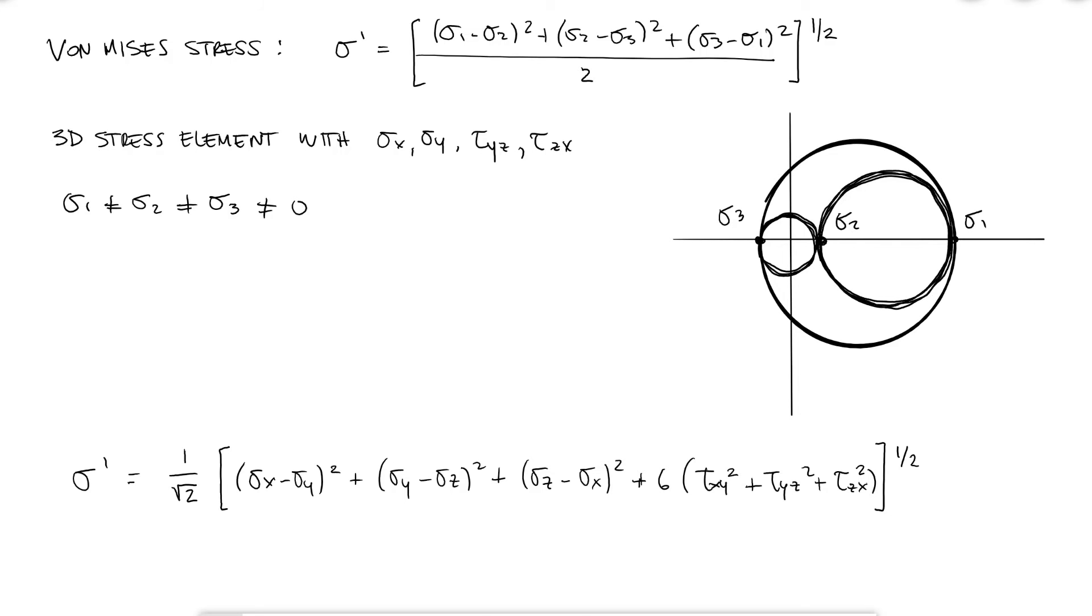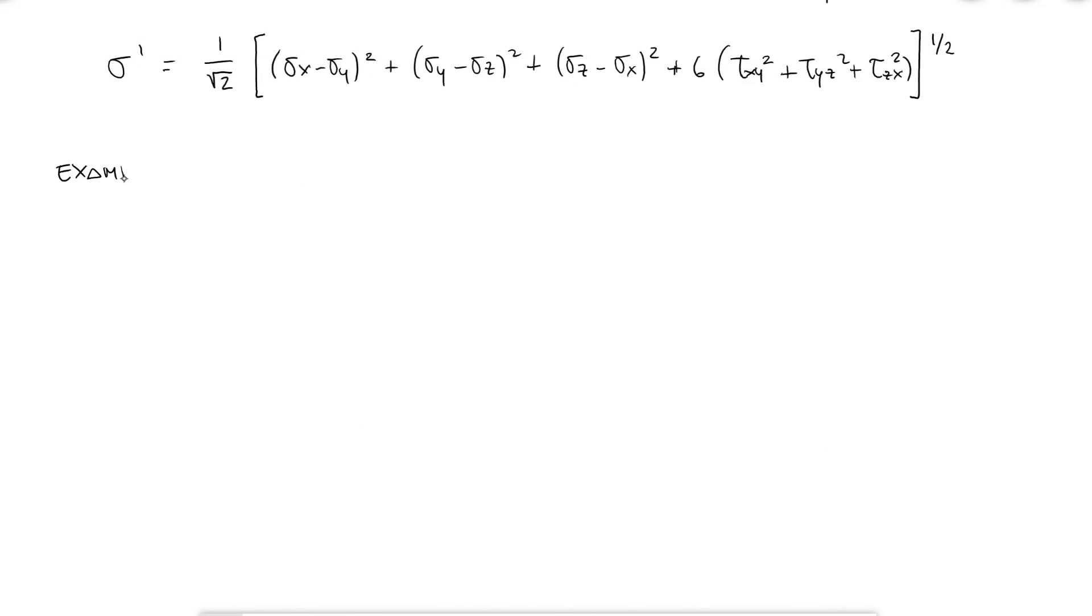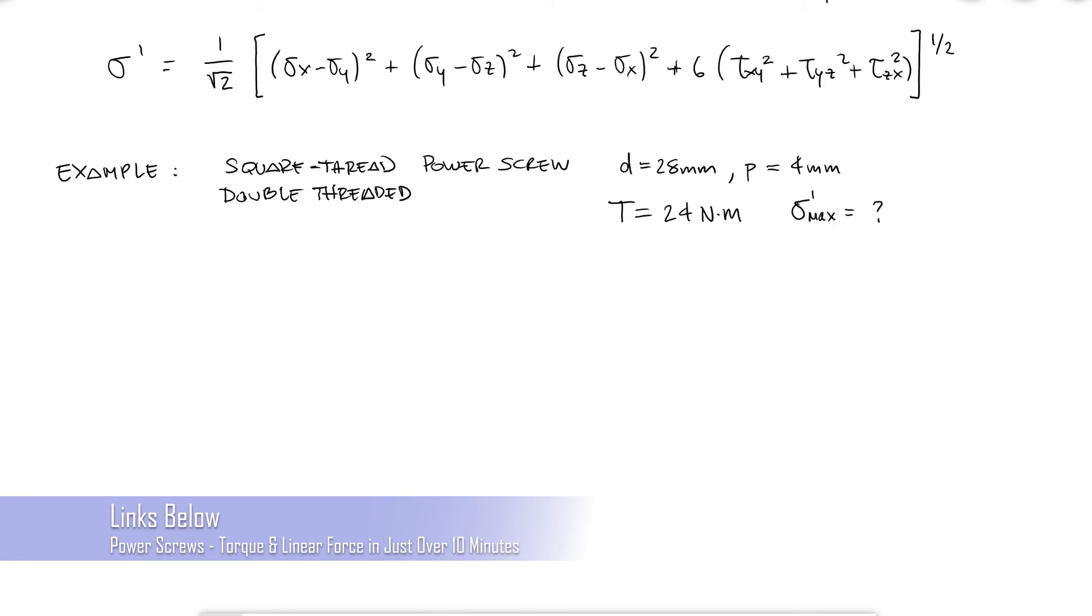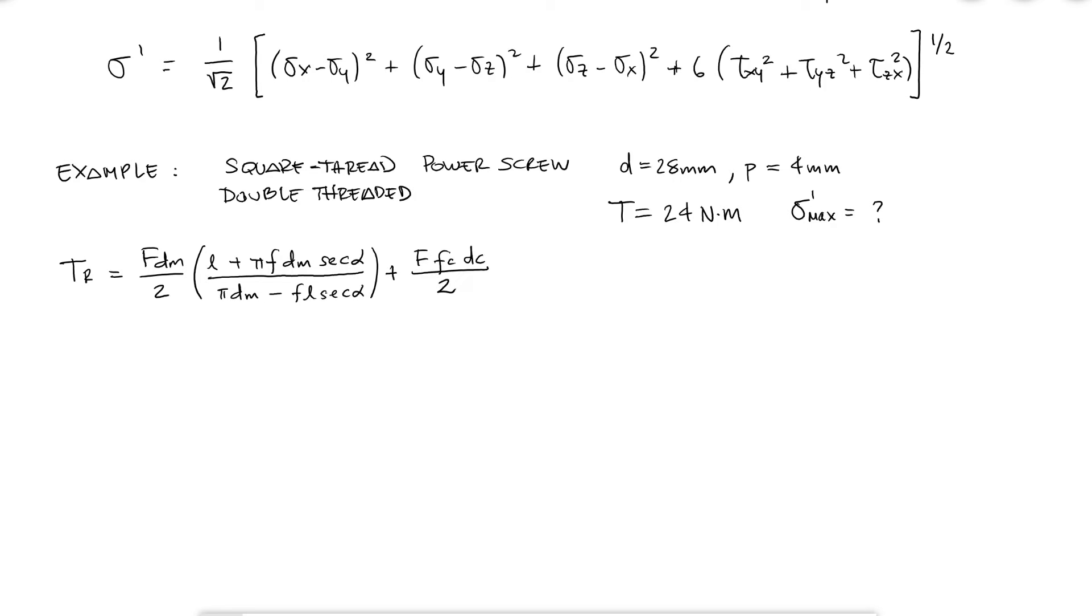Let's find out the von Mises stress for a square thread power screw that has a major diameter of 28 millimeters and a pitch of 4 millimeters with double threads. The torque that goes into the screw is 24 newton meters. The first thing to know is that the force that comes out of the power screw can be calculated using what we learned during the last main video and the example videos that followed, links below, so I will not do that here today. But if we know what the collar diameter and friction coefficients are, we would be able to use that expression to calculate the output load F, which is the load that the power screw could lift. In this case, I will skip that and give you that F is equal to 5 kilonewtons.